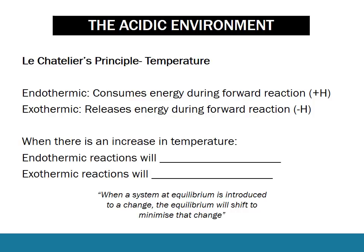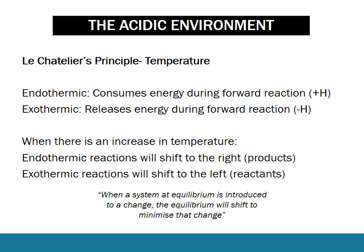Let's look at what happens when there's an increase in temperature. If there's an increase in temperature, the system, by Le Chatelier's Principle, will try to decrease the temperature. An endothermic reaction consumes energy during the forward reaction and so will shift to the right, because it will absorb the additional energy. However, an exothermic reaction will shift to the left — if it were to shift to the right, it would release more energy, increasing the temperature further. So it shifts left to absorb that extra energy.